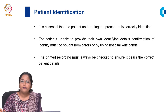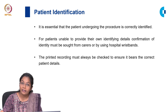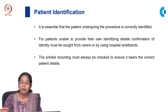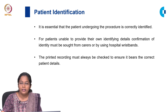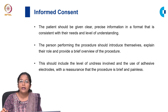Coming to the first step in an ECG recording: patient identification. Identifying the correct patient is very important. You should either identify the patient by using the wrist bands which the patient wears, or if the patient is not able to communicate, at least through the bystanders. The printed ECG paper should always bear the correct identification details of the patient.